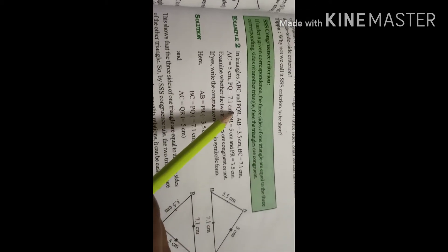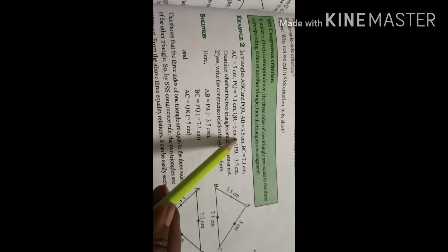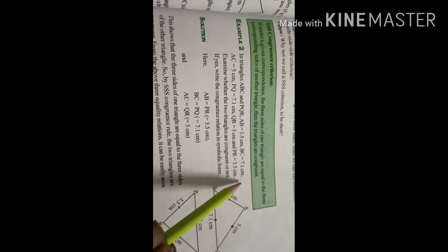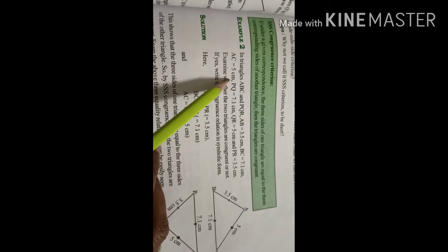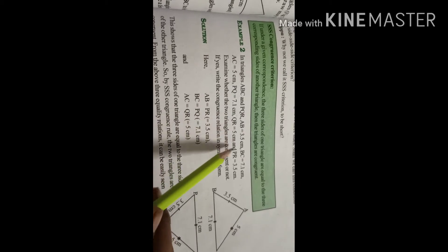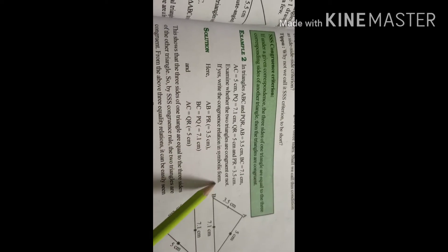In triangles ABC and PQR, AB is 3.5 centimeters, BC is 7.1 centimeters, AC is 5 centimeters, PQ is 7.1 centimeters, QR is 5 centimeters, and PR is 3.5 centimeters. Examine whether the two triangles are congruent or not.